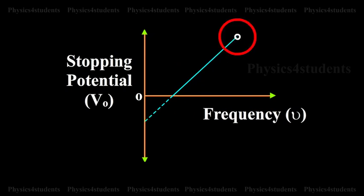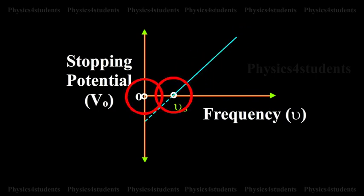From this graph, it is found that at a frequency nu0, the value of the stopping potential is zero. This frequency is known as the threshold frequency for the photometal used. The photoelectric effect occurs above this frequency and ceases below it.